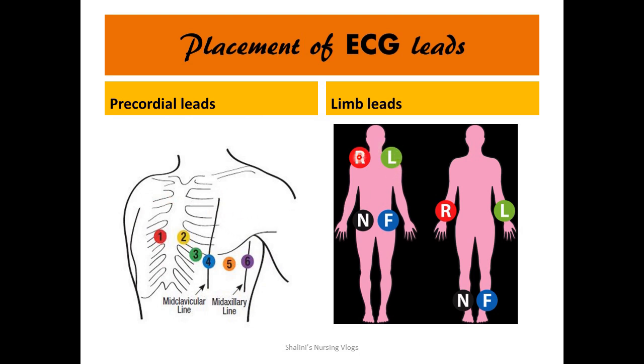For limb leads: lead 1 is placed on the right side, lead 2 on the left, and lead 3 on the foot. The N electrode represents neutral in both pictures and is used to complete the circuit.